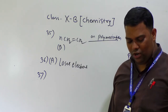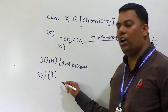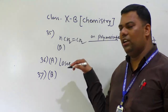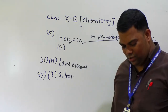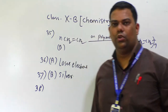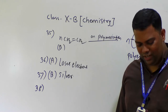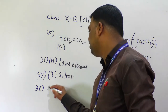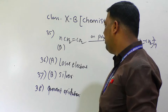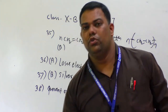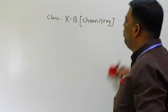Question number 37: which of the following elements causes corrosion? Gold, silver, and platinum — no, they do not corrode. Option B is silver. So here the answer is option B — silver. Question number 38: the function of an antioxidant is to prevent oxidation. So antioxidants prevent oxidation.